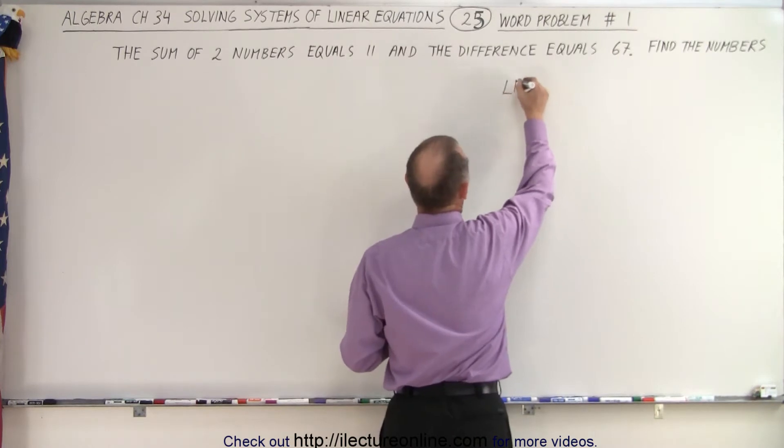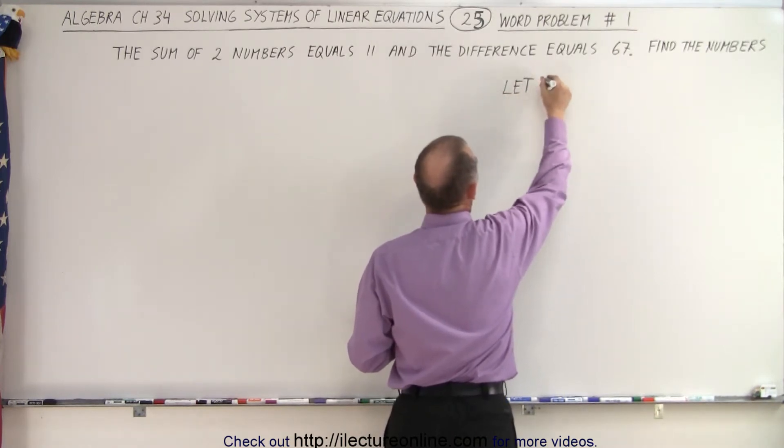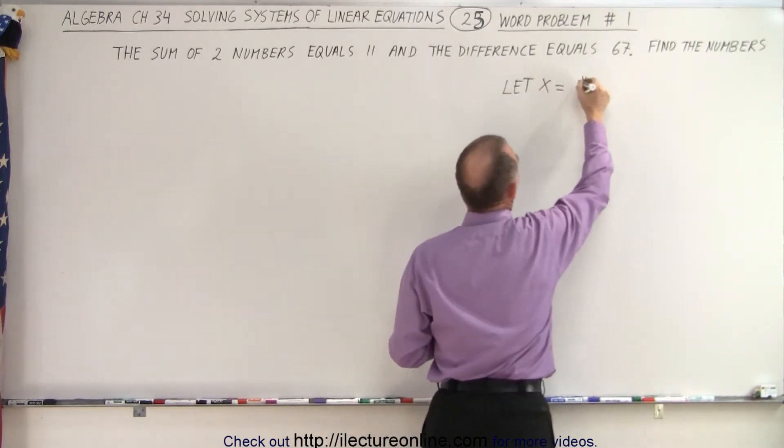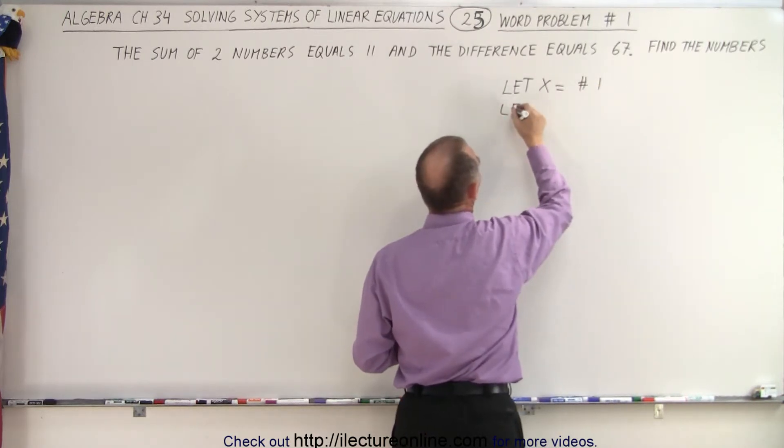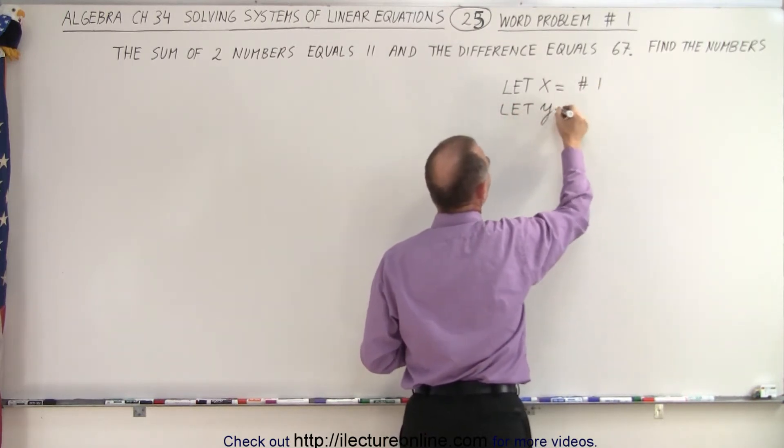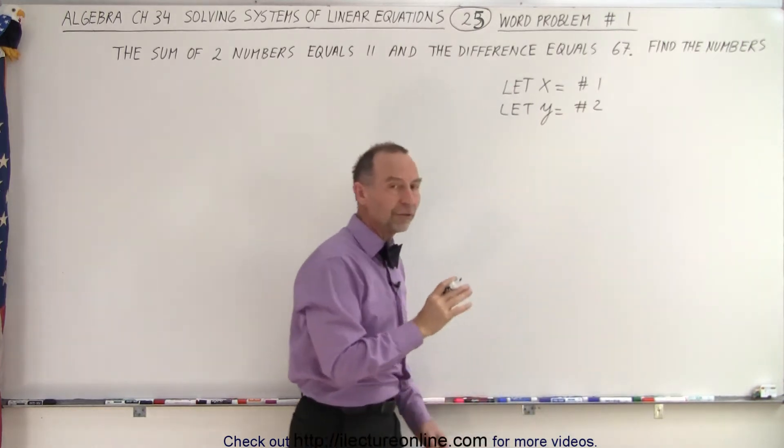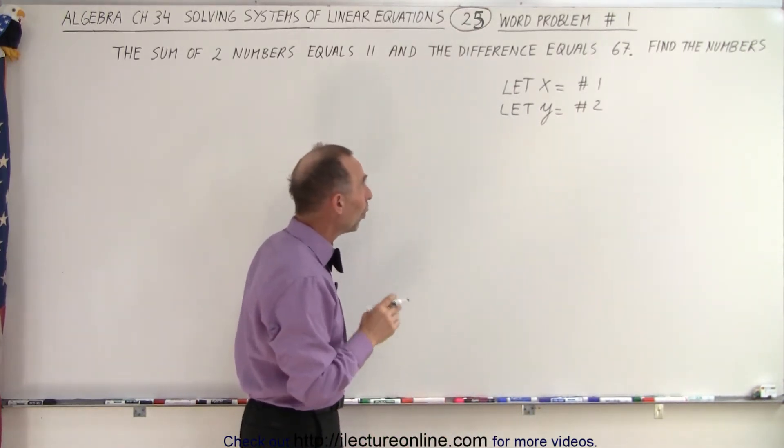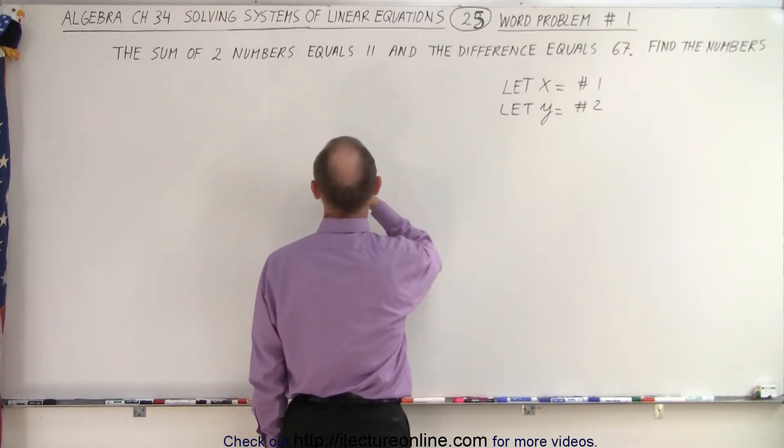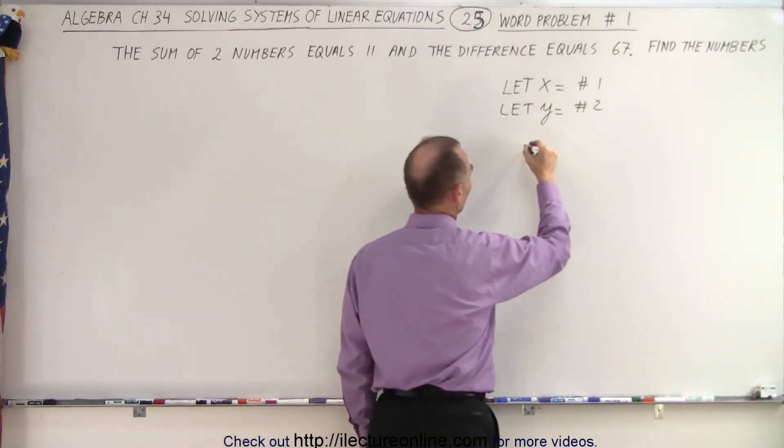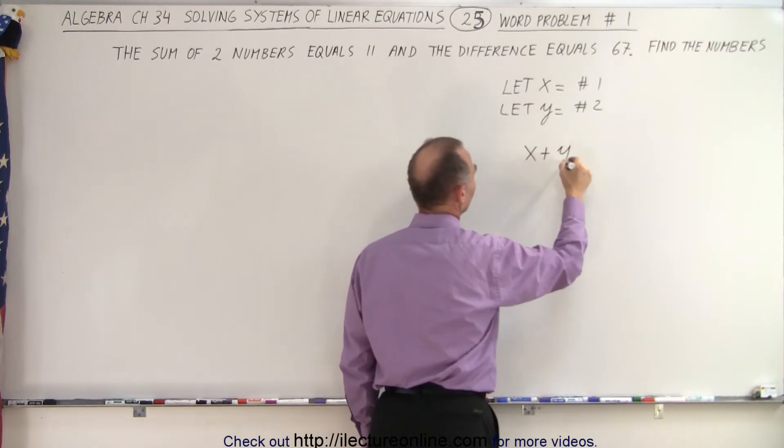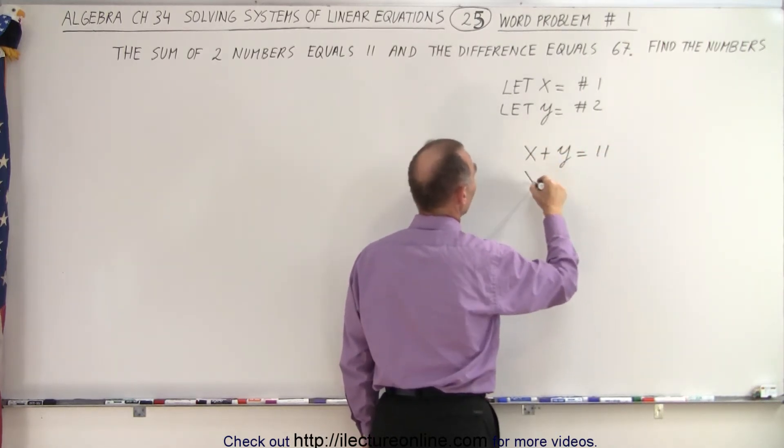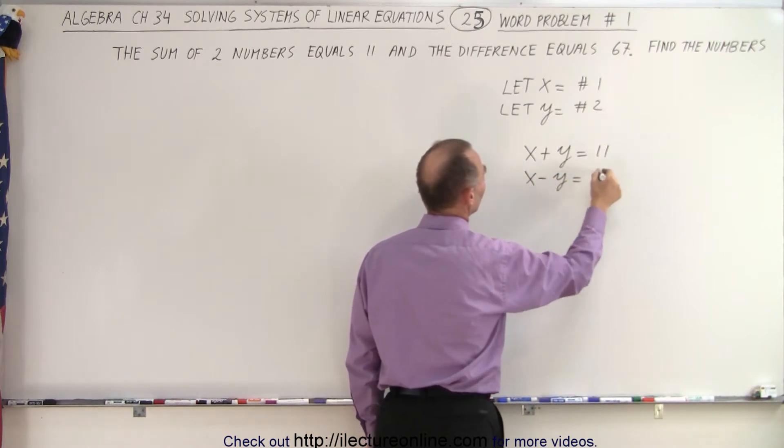So we're going to write: let x equal number one, and let y equal number two. So one number is x, the other is y. They tell us that the sum is equal to 11, so x plus y equals 11, and the difference is equal to 67, so x minus y equals 67.